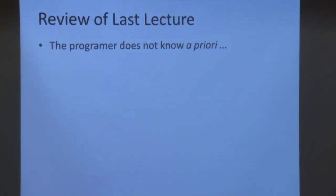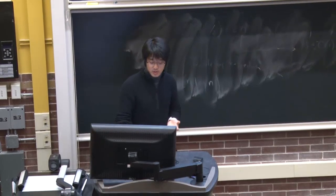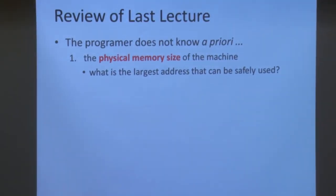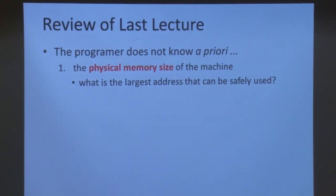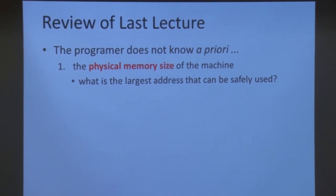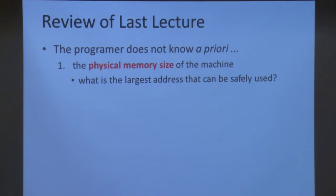To start with a review of last lecture: when the programmer is writing her code, she does not have prior information about the physical memory size of the machine. For example, what is the largest address she can use? She doesn't know, because she has no idea which machines the code will eventually run on — it might run on a small embedded machine with one megabyte of memory, or a workstation with four terabytes.